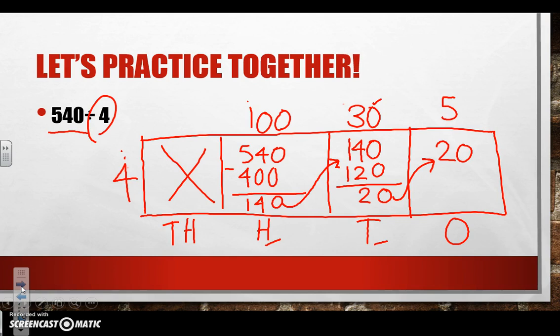And again, we're going to multiply 4 times 5 which gives me 20. I'm going to subtract. Again, when I get zero at the end, I'm able to stop and add up my numbers at the top. And this will leave me with 135 as my quotient.